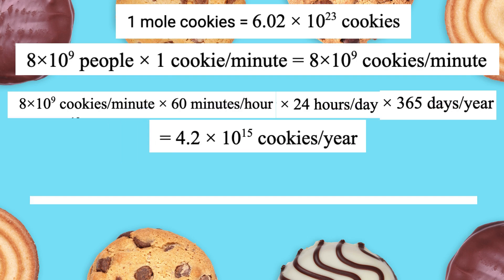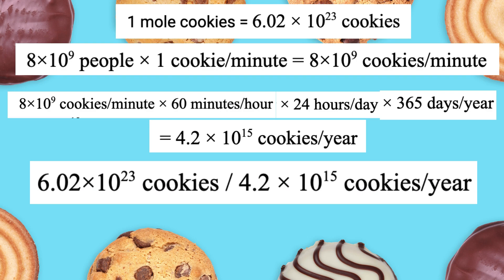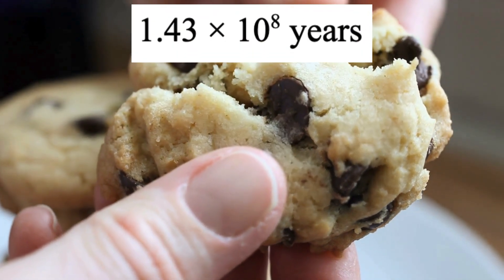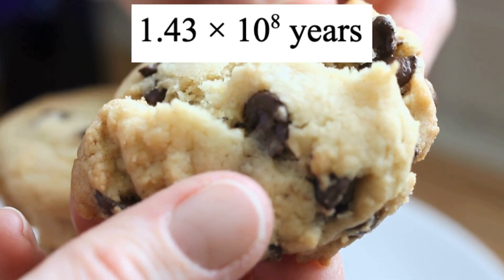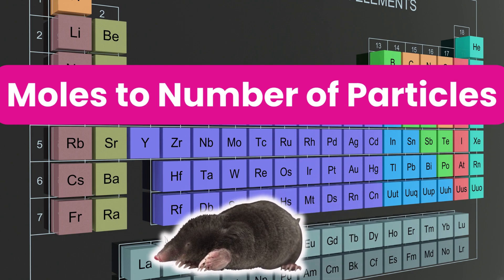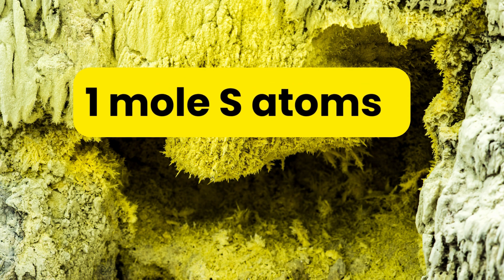To find out how many years it will take 8 billion people to eat a mole of cookies, we divide the number of cookies in a mole by the number of cookies eaten in one year. So 6.02 times 10 to the 23 cookies divided by 4.2 times 10 to the 15 cookies per year equals 1.43 times 10 to the 8 years. It would take approximately 1.43 times 10 to the 8 years for 8 billion people to eat a mole of cookies, assuming each person eats one cookie per minute continuously.